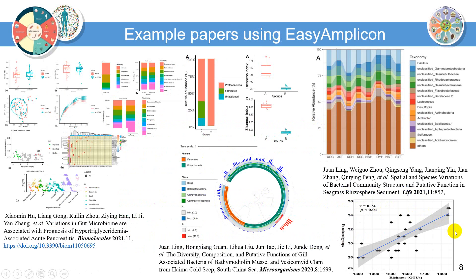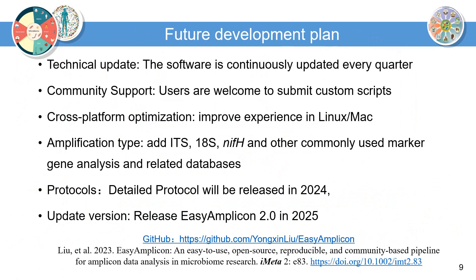Example papers using Easy Amplicon. Future development plan: technical update — the software is continuously updated every quarter. Community support — users are welcome to submit custom scripts. Cross-platform optimization — improve experience in Linux/Mac. Amplification type — add ITS, 18S, NIFH, and other commonly used marker gene analysis and related databases. Detailed protocol will be released in 2024, and Easy Amplicon 2.0 will be released in 2025.